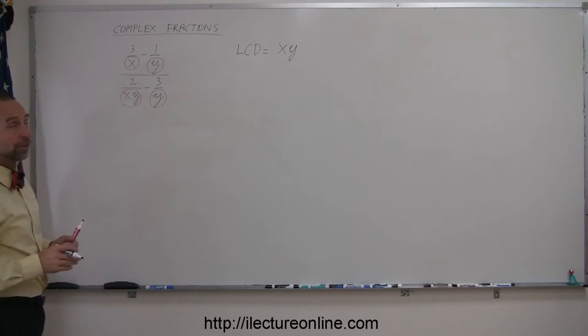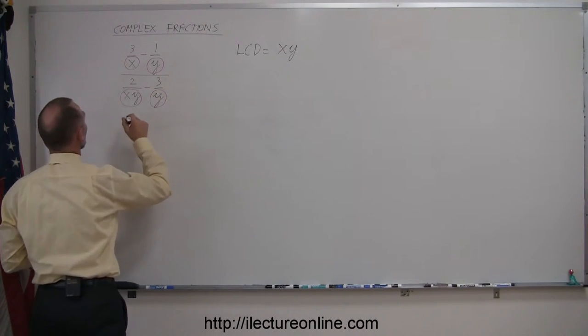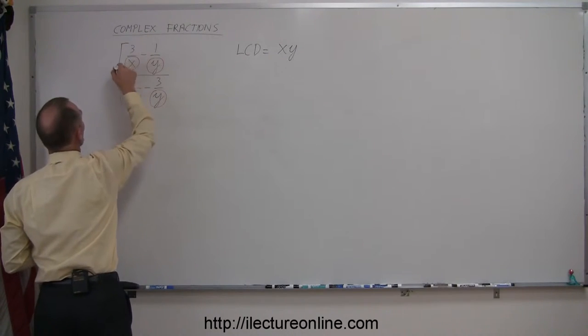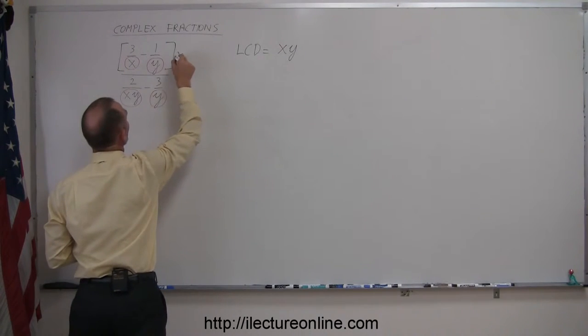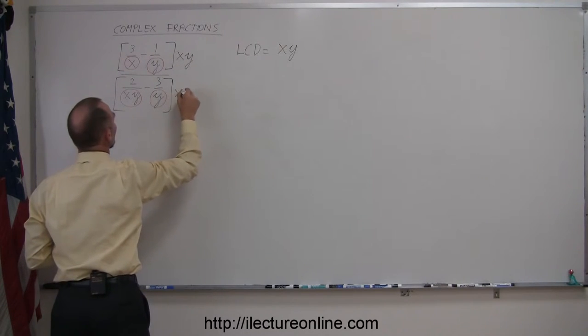which means I'm going to multiply both the numerator and the denominator by that lowest common denominator. So I'm going to multiply the numerator by x times y, and I'm going to multiply the denominator times x times y.